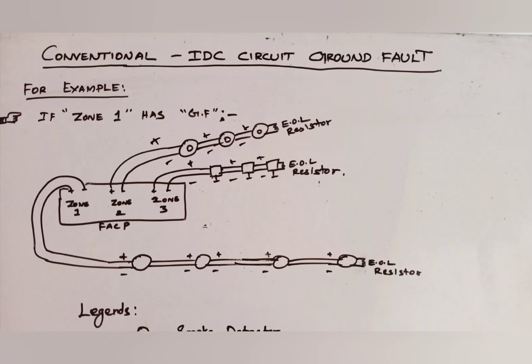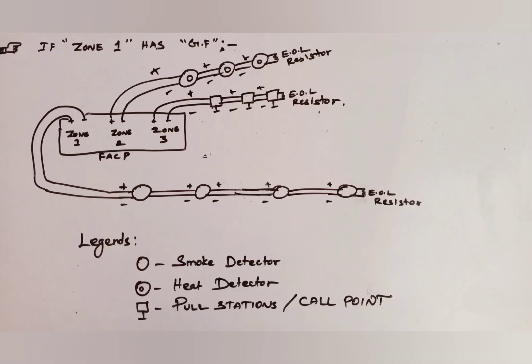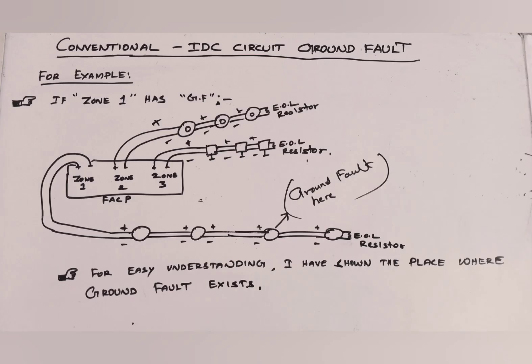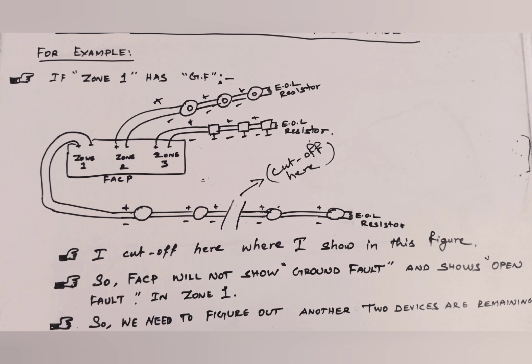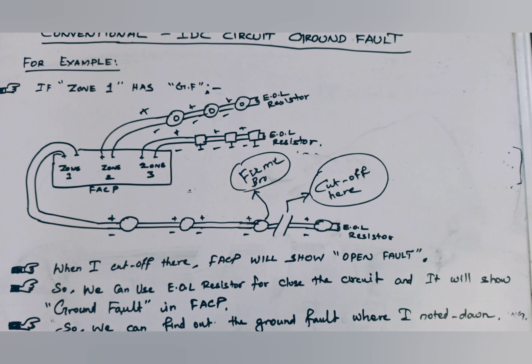So far we are troubleshooting for addressable system. Now we need to turn on the conventional system. Same as addressable system, I am showing the place where we have ground fault in zone 1 of conventional system. When I will cut off the continuity as shown in figure, zone 1 has open fault in fire alarm control panel. To avoid this problem, I am using end of the line resistor to close the loop. Then you can test the ground fault in usual way. Then you can find out the ground fault.